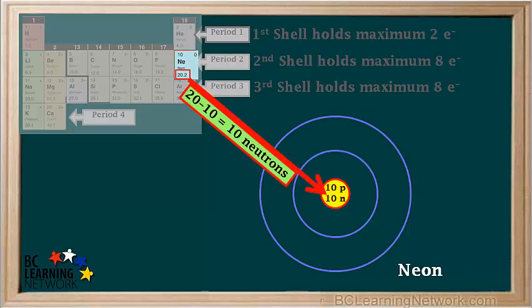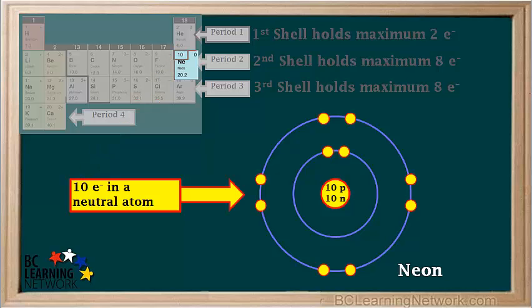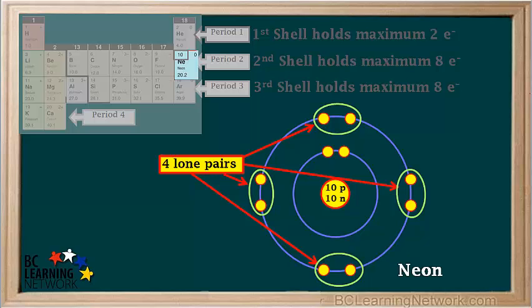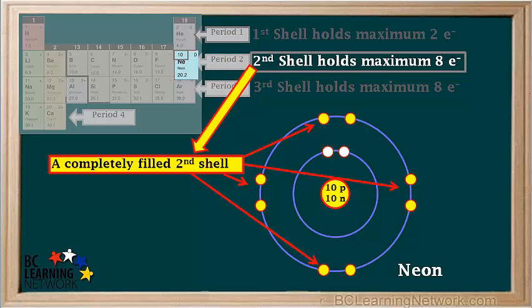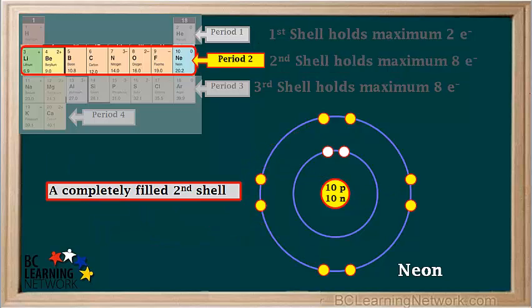Neon has 10 protons, and its most common form has 20 minus 10 equals 10 neutrons in its nucleus. Neon has 10 electrons in a neutral atom. The second shell is completely filled with four lone pairs — also called a stable octet. The Bohr model tells us the second shell holds a maximum of 8 electrons, so the second shell is completely filled. Because its highest occupied shell is completely filled, neon is a noble gas. We've now come to the end of period 2 and have just filled up the second shell.